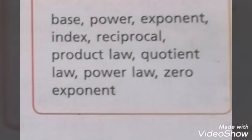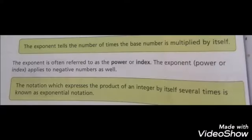We also call exponent is par. The exponent tells the number of times the base number is multiplied by itself. The exponent is referred to as the par or index. The exponent applies to negative numbers as well. The notation which expresses the product of an integer by itself several times is known as exponential notation.